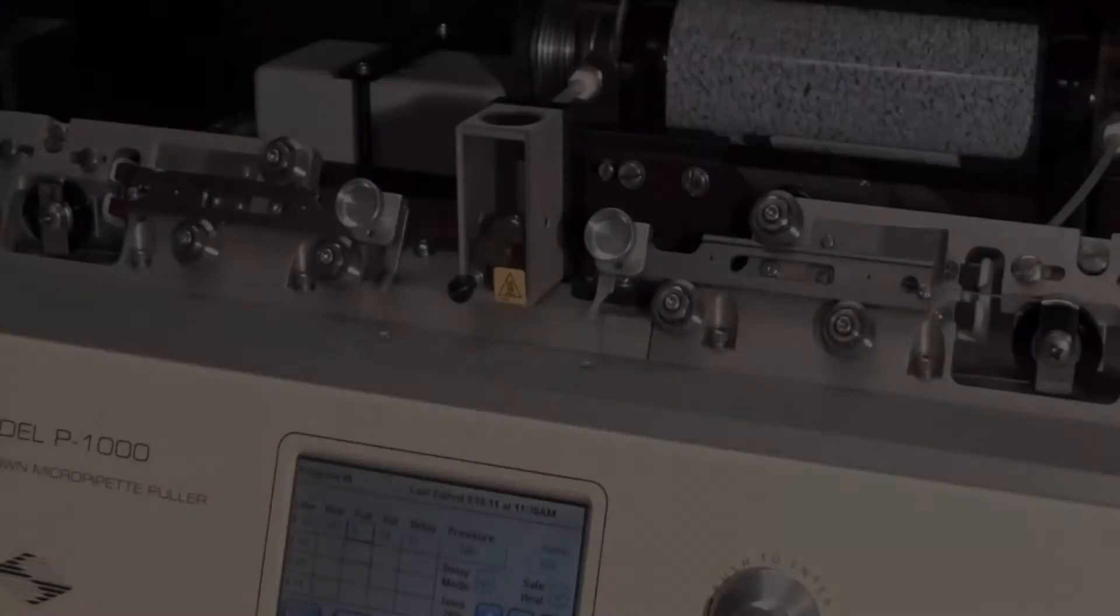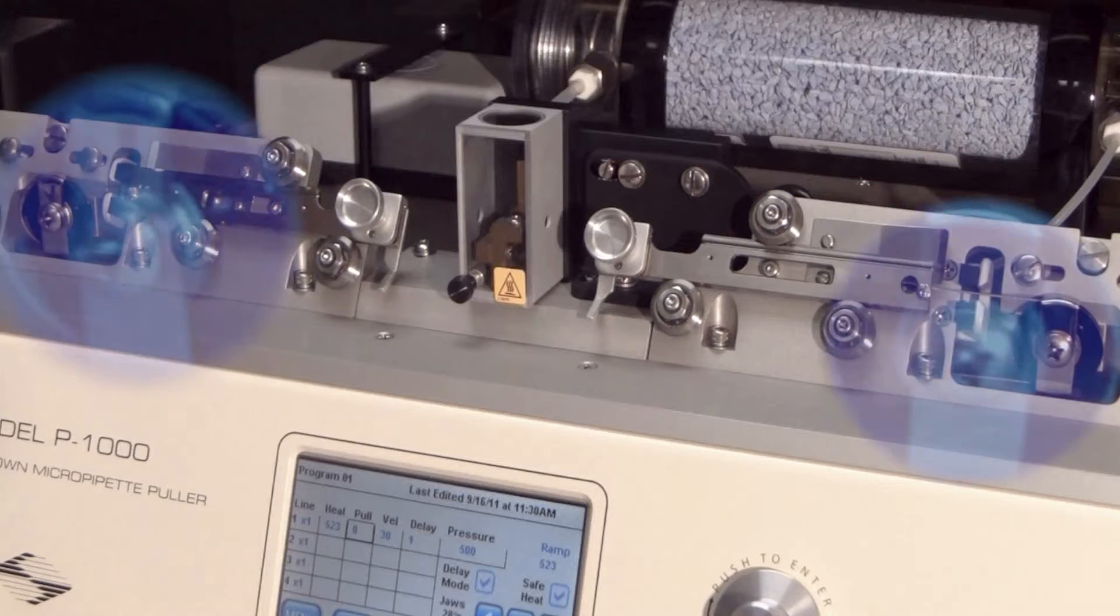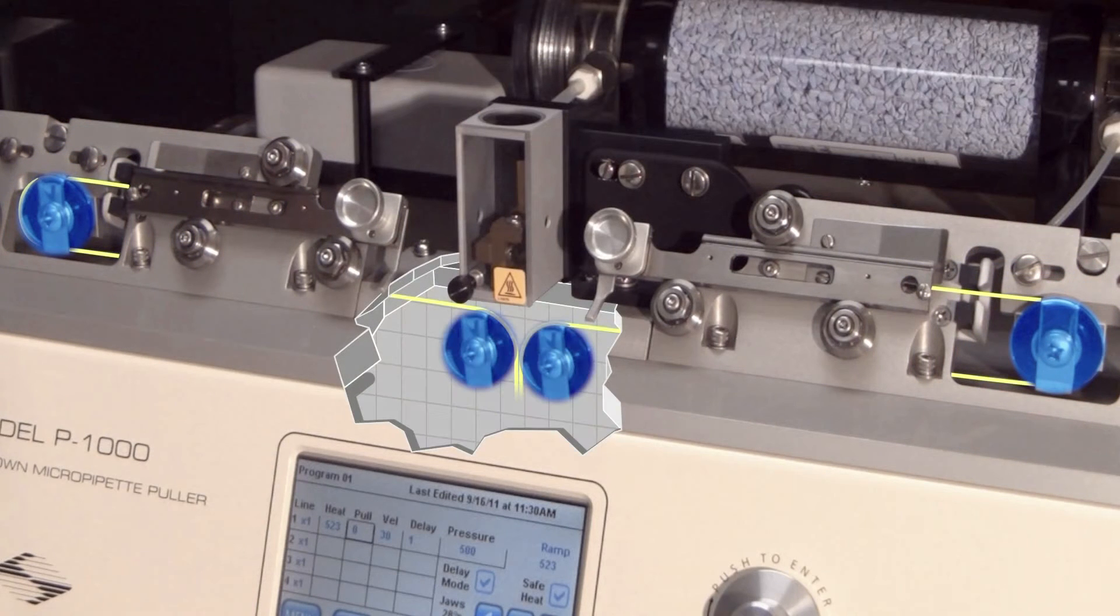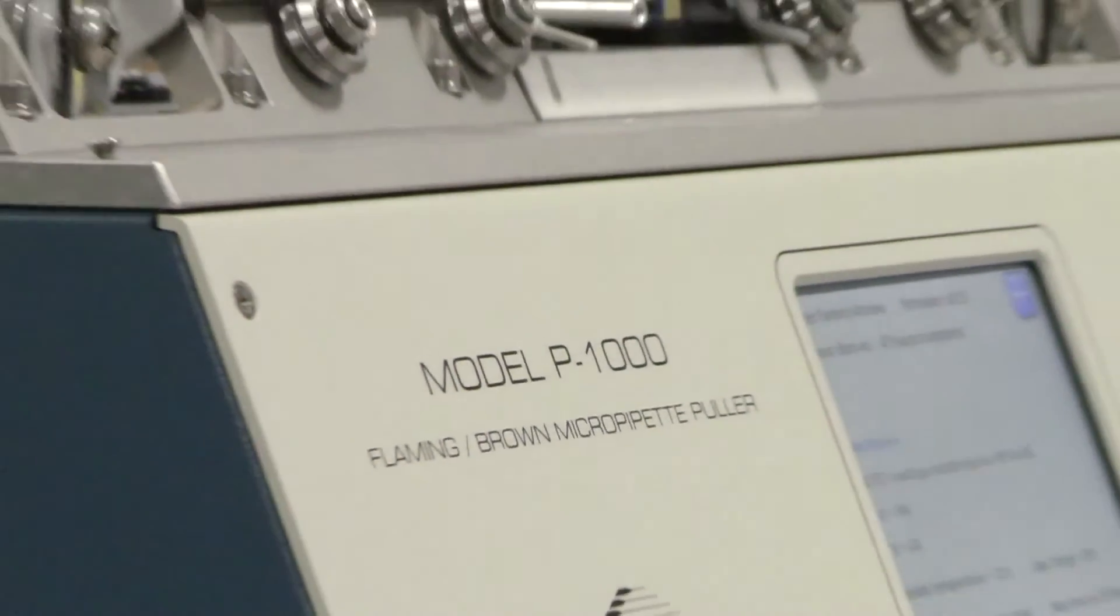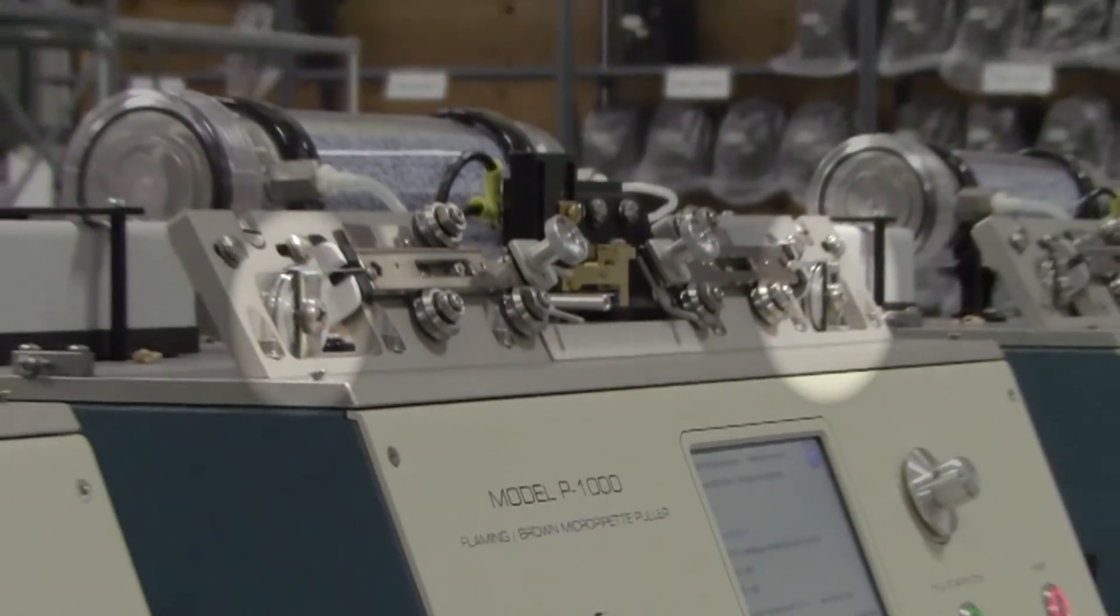Each SUTTER horizontal puller has four pulleys, one on each end of the upper pulley assembly and two lower pulleys concealed underneath the heating element. The pulleys on your instrument may either be silver as seen on the P1000 puller here or black.